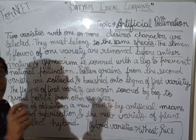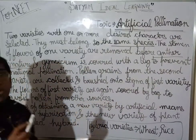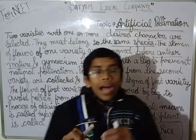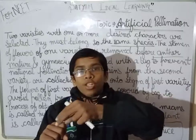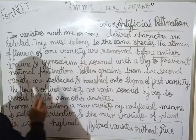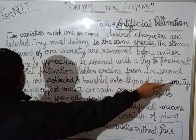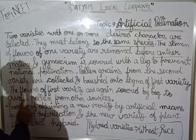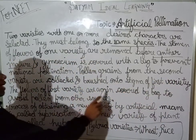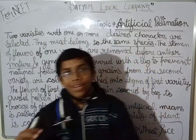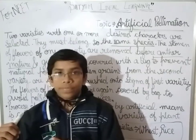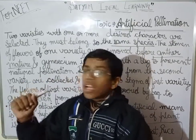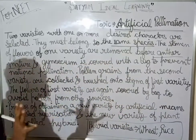I will open the poly bag and brush the pollen grains upon the stigma of the plant that was covered with the bag. Pollen grains from the second variety are collected and brushed onto the stigma of the first variety. The flowers of the first variety are again covered by the bag.